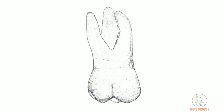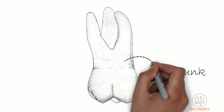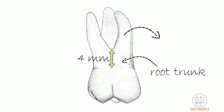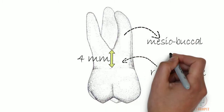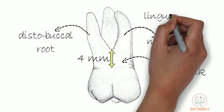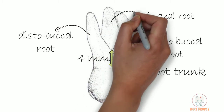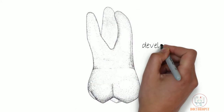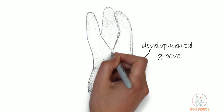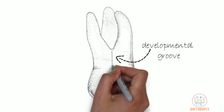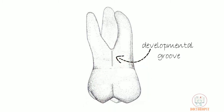All three roots are visible from this aspect. The root trunk bifurcates at about 4 mm from the cervical line into the mesiobuccal root and distobuccal root. The lingual root is partially seen and is slightly longer. A developmental groove is seen running on the root starting at the bifurcation and ending at the cervical line.